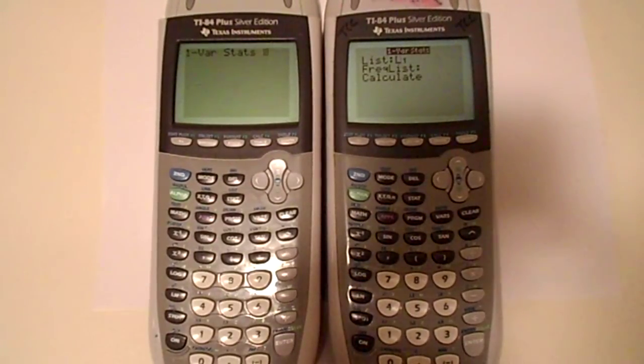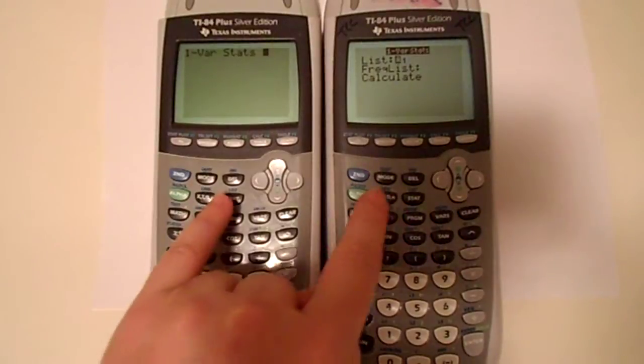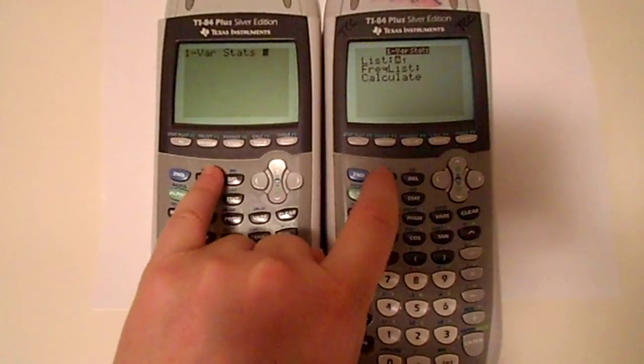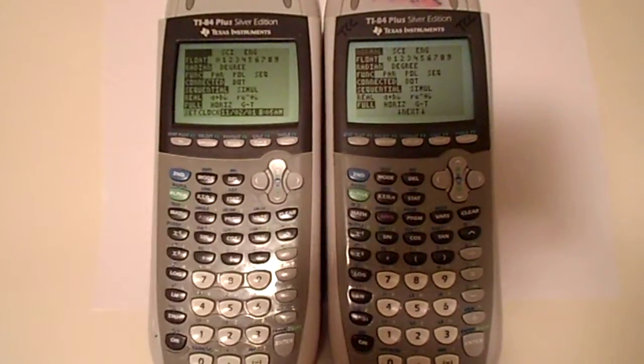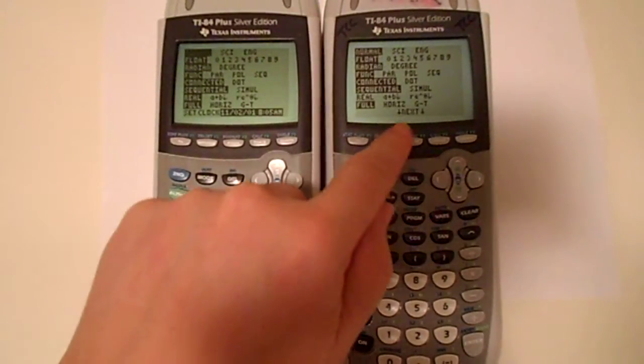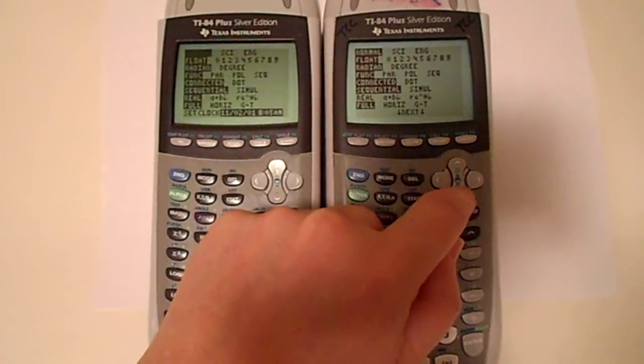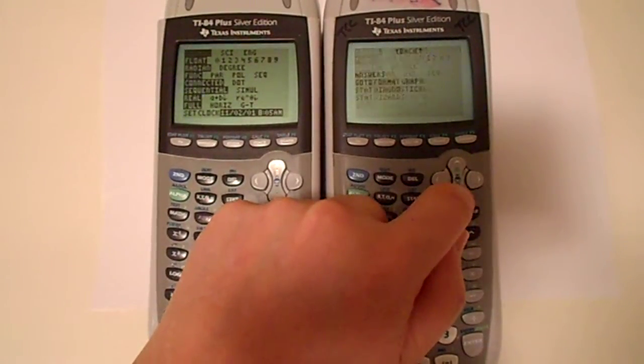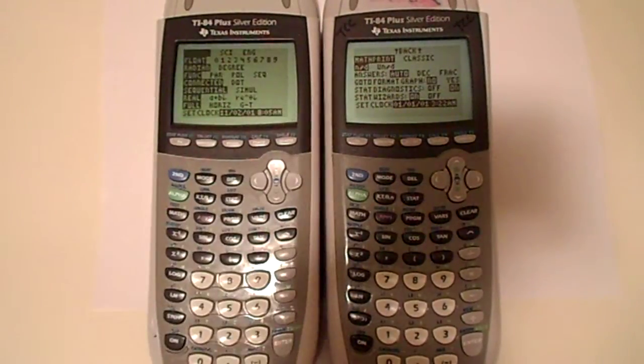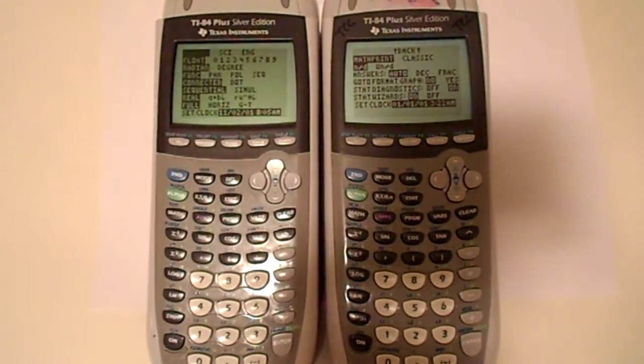The calculators can be made to look alike by checking under the mode button to see which calculator has the upgraded software from Texas Instruments. Notice the calculator on the right says next indicating that there are more mode settings on the second screen. The calculator on the left does not have this option.